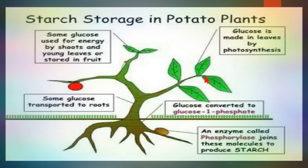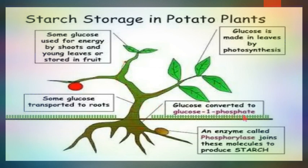Some glucose is used by shoots and young leaves; some is transported to roots, since roots cannot photosynthesize and need food; and some goes to the stem, growing leaves, and flowers. Some glucose is converted into glucose-1-phosphate, and an enzyme called phosphorylase joins these molecules together to produce starch.